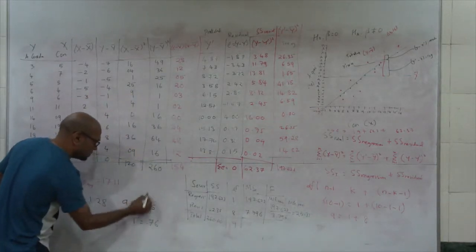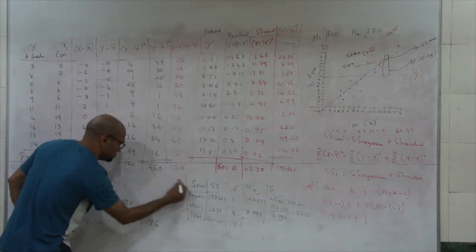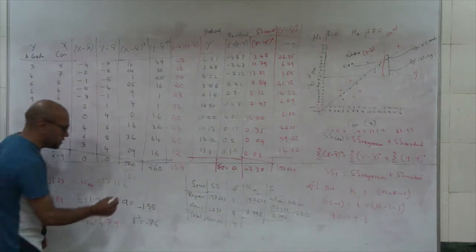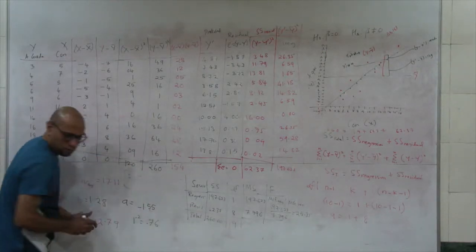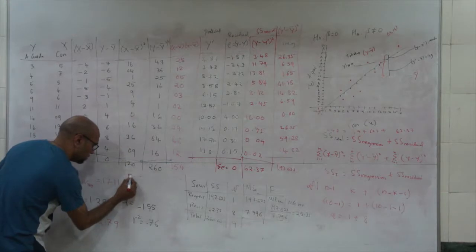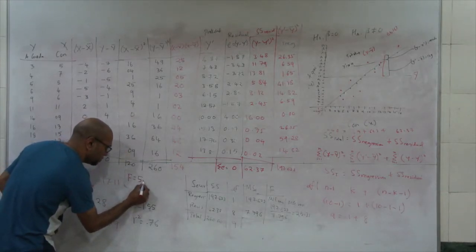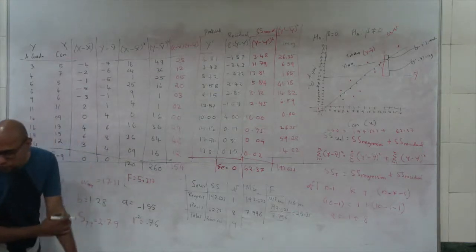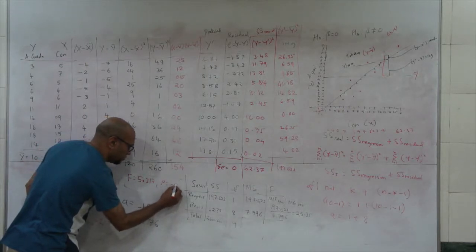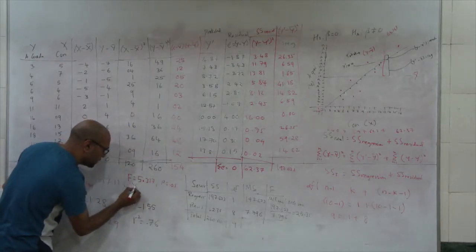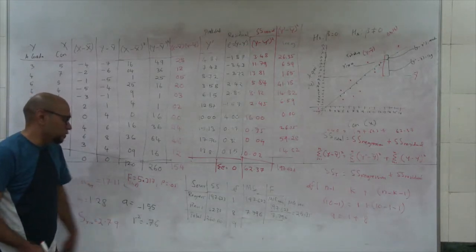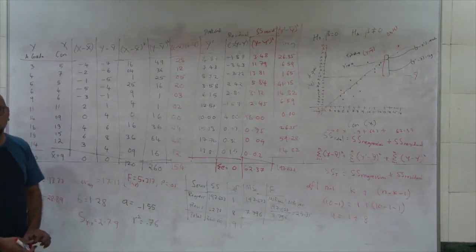The critical F value is 5.317. So F at 1 and 8 degrees of freedom with a probability of 0.05 is 5.317.